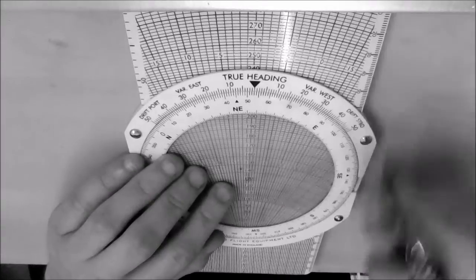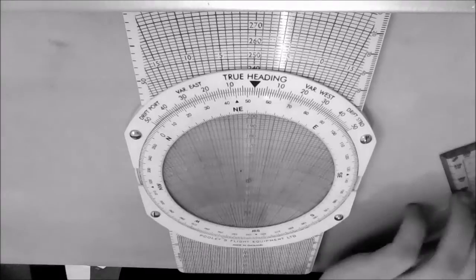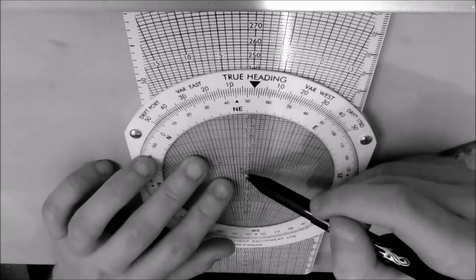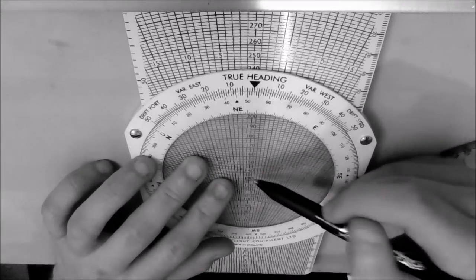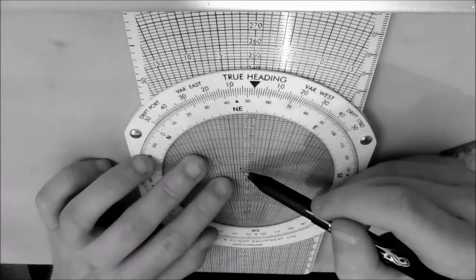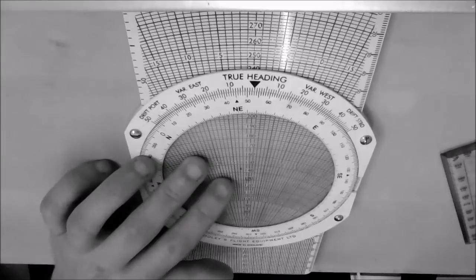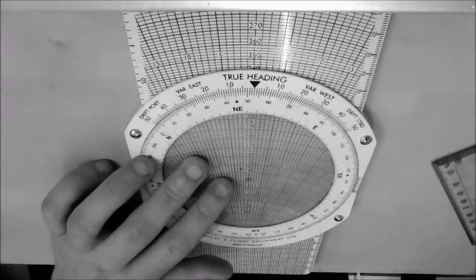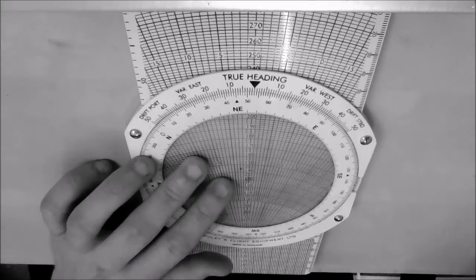So we now know that our track is 050, and for our ground speed we simply read off where the dot lies in between the ground speed markers. So we know that that's 144, that's 146, the dot is lying in between the middle so we know that our ground speed is 145 knots. And it's as simple as that so the answer is 050 at 145 knots.